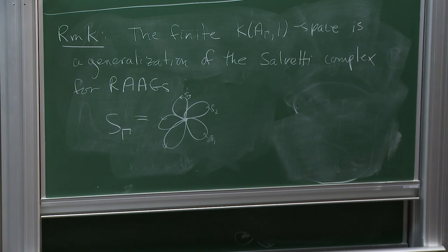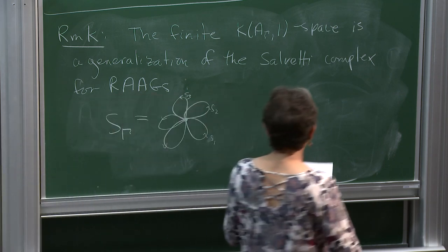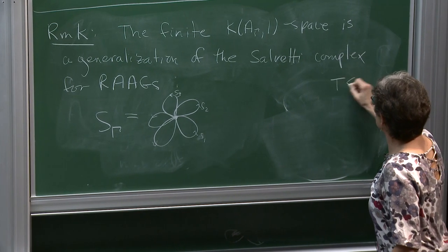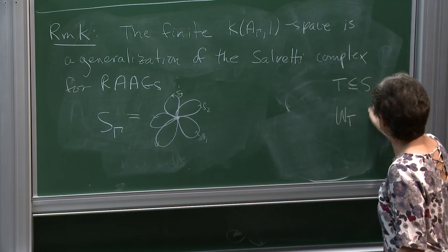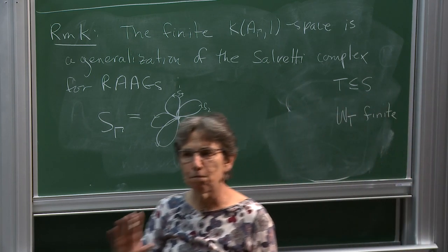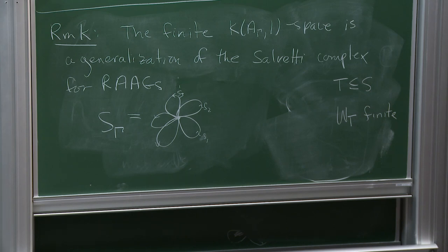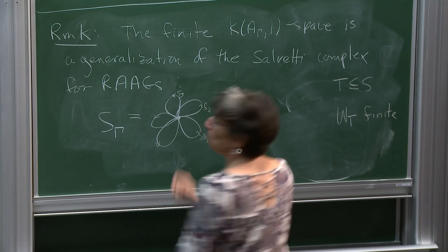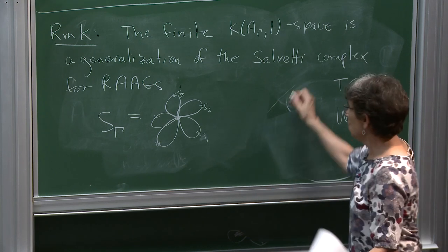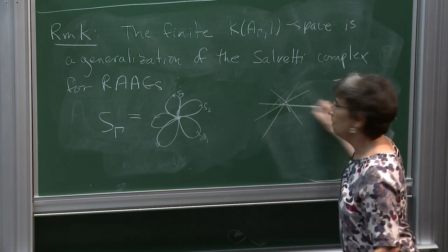Once we've proved conjecture 5, we've also proved conjecture 4. Once we know D(γ) is contractible, we get that the Salvetti complex's universal cover is contractible, and then we're done. So conjecture 5 implies conjecture 4.